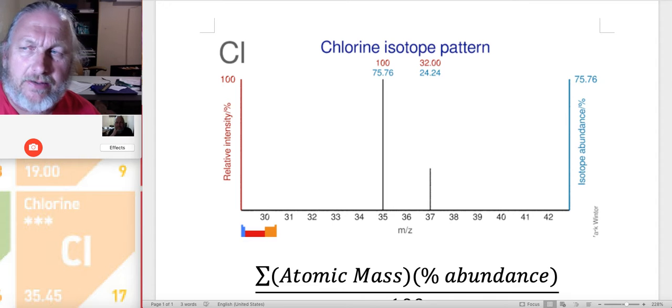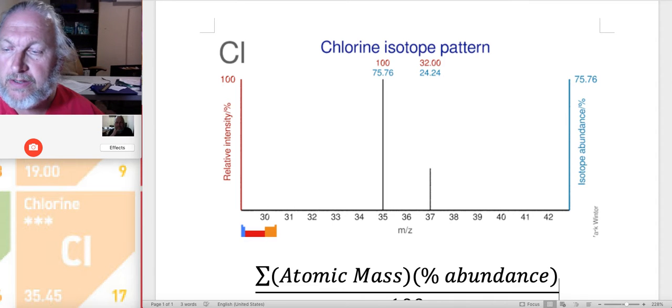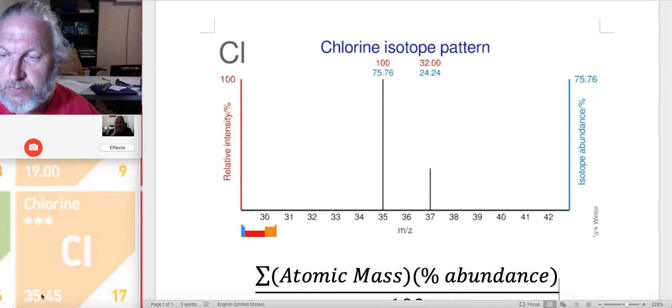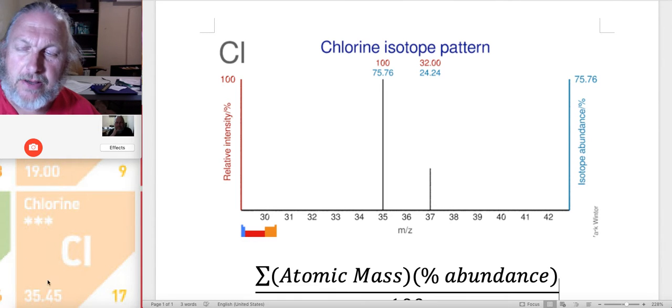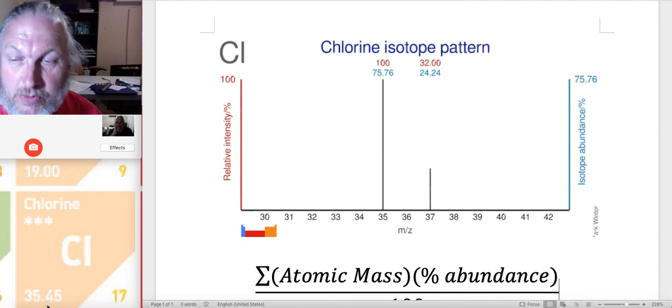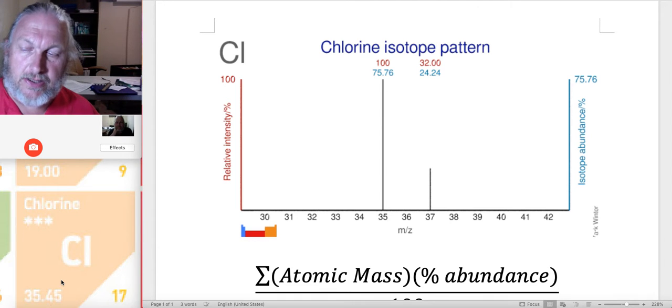But this is how you calculate where the decimal comes from on a periodic table. Again, this is an average atomic mass or relative atomic mass because we don't have 0.45 neutrons. So if I say I've got 35 neutrons in chlorine, that means that one individual atom has 35 neutrons.